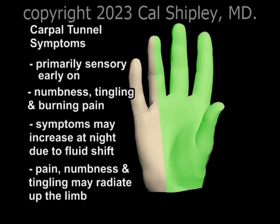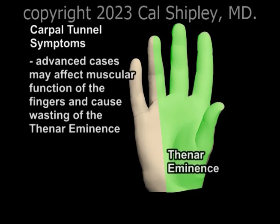Symptoms may radiate into the forearm, and in some cases as high as the shoulder on the affected side. In more advanced cases, muscles of the fingers and hand innervated by the median nerve may be affected, resulting in difficulty grasping objects and wasting of the muscles of the thenar eminence.